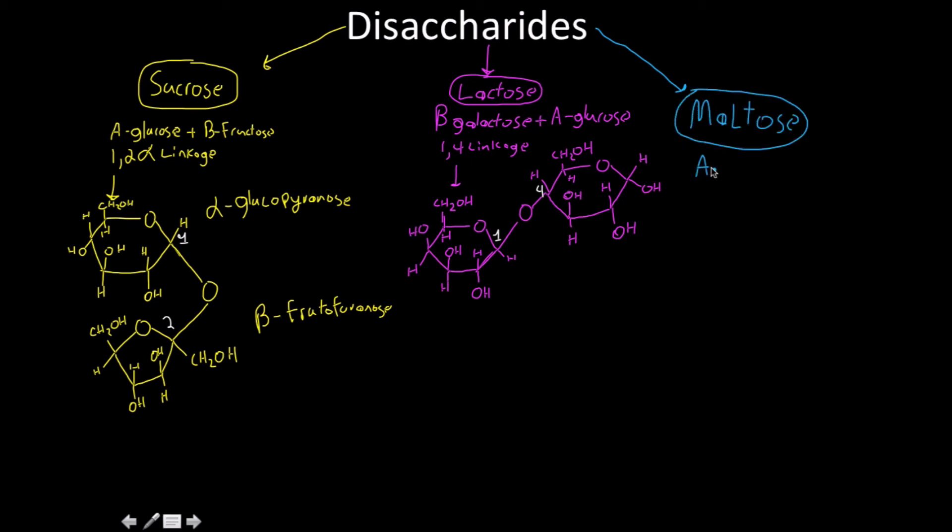The next one, though, is maltose. This is literally just an alpha-glucose and an alpha-glucose. There's a one-to-four linkage as well. It's a very common straight polymer form. They're always going to be one-four. And just assume, unless I say otherwise, that I'm talking about the D form of glucose as well.